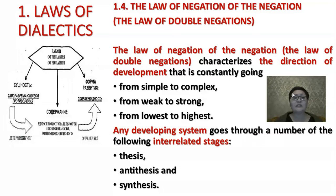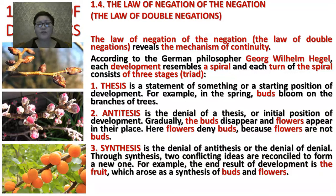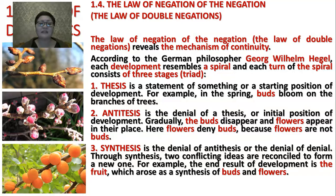The last law is the law of negation of the negation, or the law of double negation. This law characterizes the direction of development that is constantly going from simple to complex, from weak to strong, from lowest to highest. Any developing system goes through a number of interrelated stages: thesis, antithesis, and synthesis. According to the German philosopher Georg Wilhelm Hegel, each development resembles a spiral and each turn of the spiral consists of three stages or triads: thesis, antithesis, and synthesis.